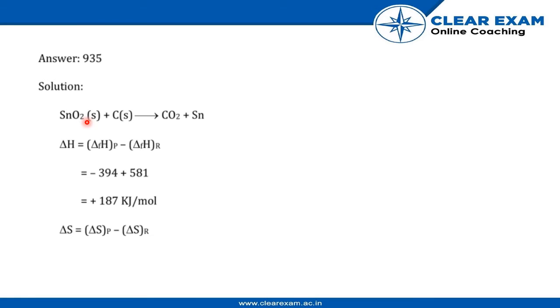We have to take the given Kempel equation from the above question. Delta H will be delta H of products minus delta H of reactants, that is minus 394 plus 581, which equals plus 187 kilojoules per mole.